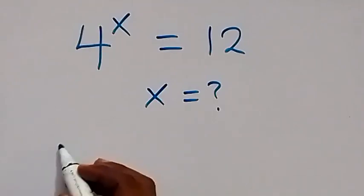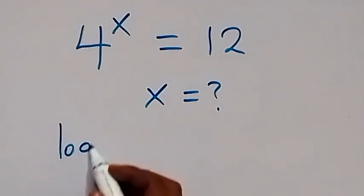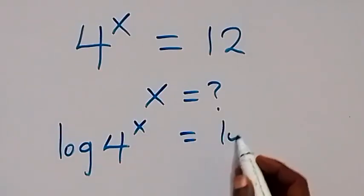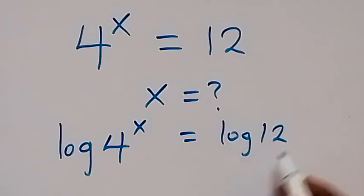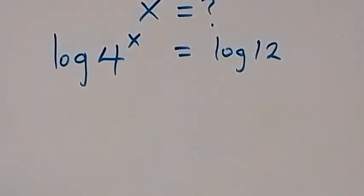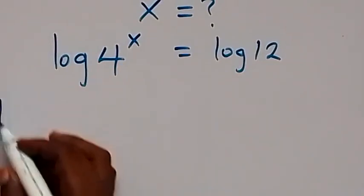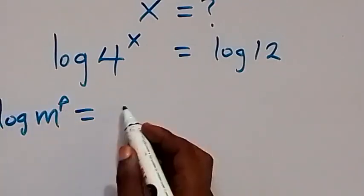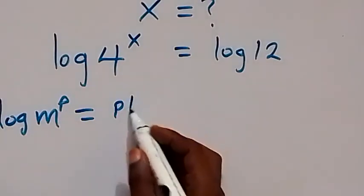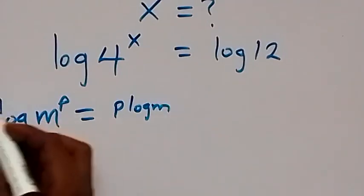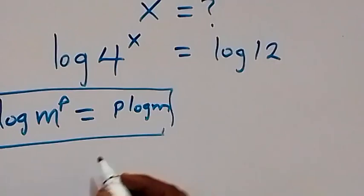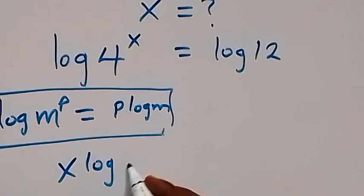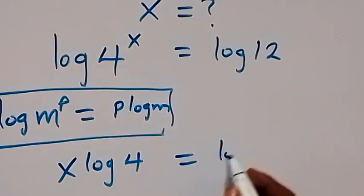From here, let's take the log on both sides and we have log of 4 raised to power x equals to log 12. Then when we apply the power law of logarithms — when we have log of n raised to power p, this power p can come to the front — so this becomes x times log 4 equals to log 12.